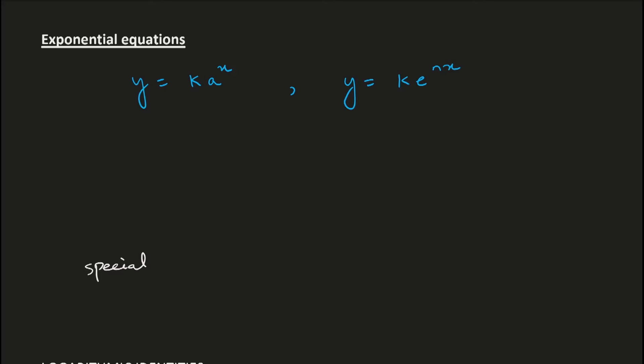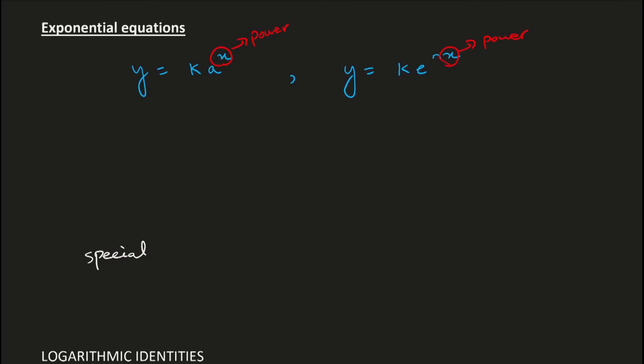There are also exponential equations for which we have to draw a straight line graph. In an exponential equation, the variable appears as a power, so if you plot x and y directly you'll never get a straight line. You have to apply logs to get a straight line. In question 2, the question will specify whether to use lg or ln, making it clear which log to apply.